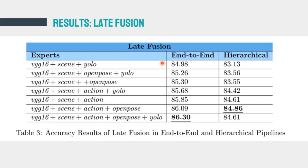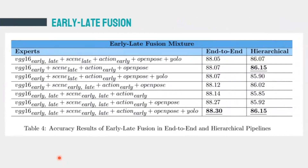These are the results for the early-late fusion. The best-performing early-late mixture fusion model scores an accuracy of 88.3% using the end-to-end pipeline. The overall performance of the mixed early and late features fusion beats each of them used alone. However, the downside is that this model is significantly slower due to the larger feature size.